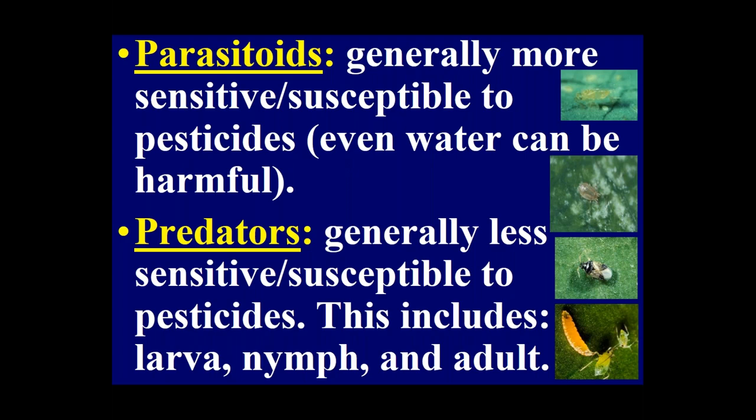In general, parasitoids are more sensitive and susceptible to pesticides than predators — even water can be harmful to parasitoids. Predators are generally less sensitive or susceptible, across all life stages: larva, nymph, and adult. However, this is a general statement — some predators are very sensitive to certain pesticides, while some parasitoids are more tolerant than others.